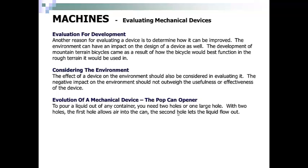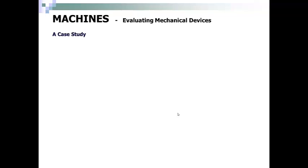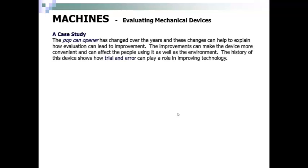Evolution of a mechanical device — the pop can opener. To pour liquid out of any container, you need two holes, or one large hole. With two holes, the first hole allows air into the can and the second hole allows the liquid to flow out. The pop can opener has changed over the years, and these changes can help to explain how evaluation can lead to improvement. The improvements can make the device more convenient and can affect the people using it as well as the environment.